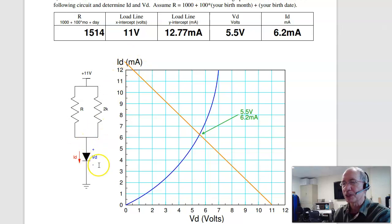That's the y-axis. When this is zero, short it out, I get voltage over R, 12.77 milliamps. That's the y-intercept. The x-intercept is when the current is zero. I have 11 minus I times R. 11 minus zero gives you 11 volts x-intercept. Connect the two points, you get a straight line. Where it intersects your curve is your solution.